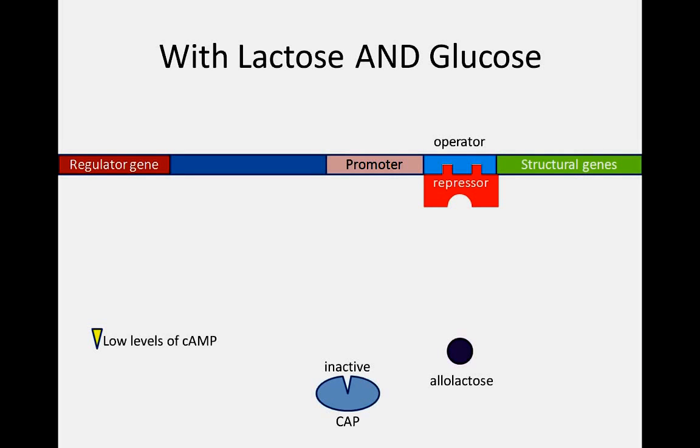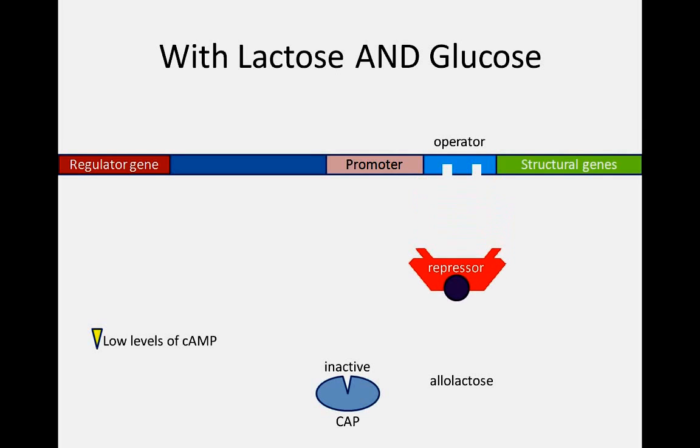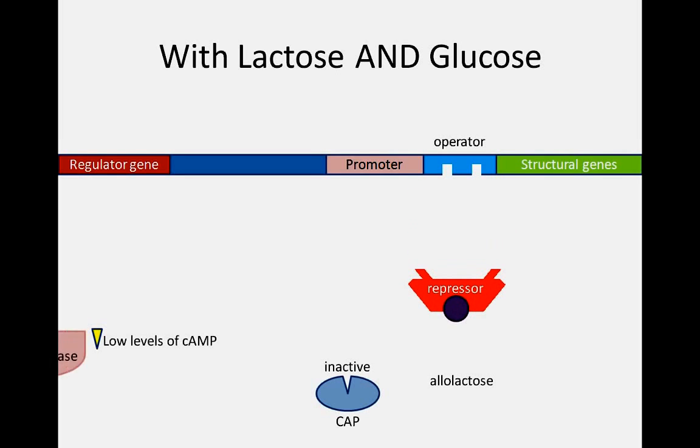Lac operon expression also relies on positive regulation. In order for RNA polymerase to effectively bind and transcribe the structural genes, an active CAP protein complex is required. However, the CAP protein is only active when bound by cyclic AMP. When glucose is available, cyclic AMP levels remain low and CAP therefore remains inactive. Under these circumstances, even though lactose is present, little transcription of beta-galactosidase, permease, and transacetylase occurs.